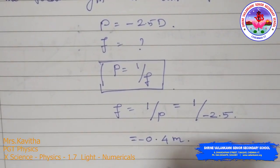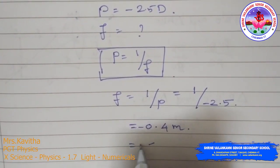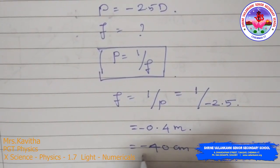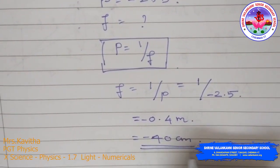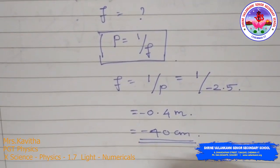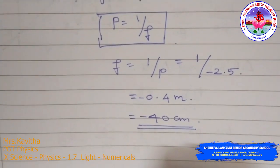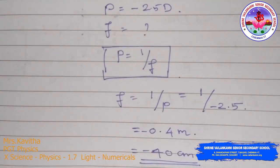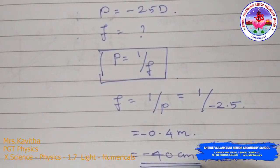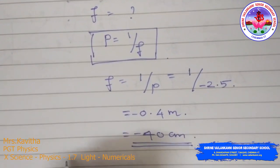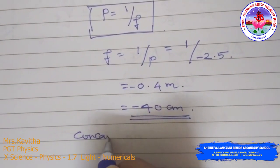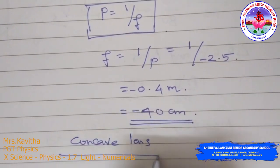That means in centimeters it is equal to −40 cm. The negative sign indicates this is a concave lens, because for a concave lens all values of U, V, and F are negative. So the nature of the lens is concave.